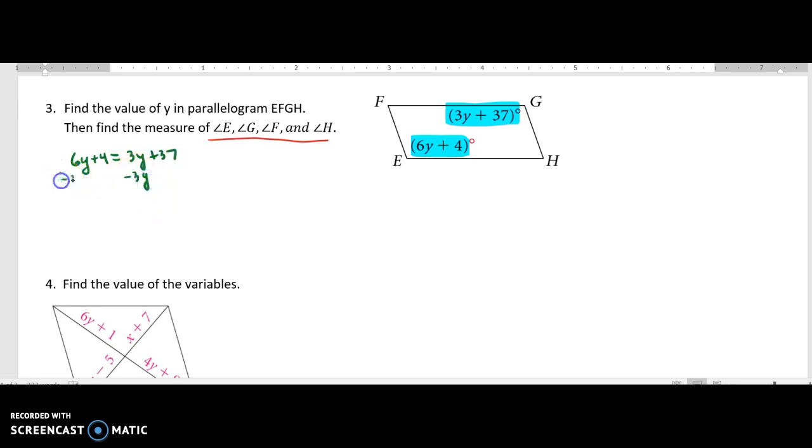When I subtract 3Y, and then I subtract 4, I'm basically solving for Y. So 3Y is equal to 33. And now when I divide by 3, Y is equal to 11.